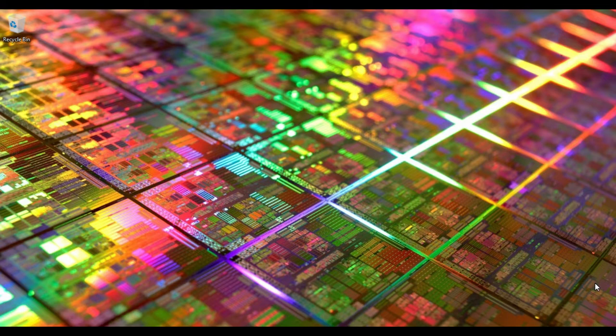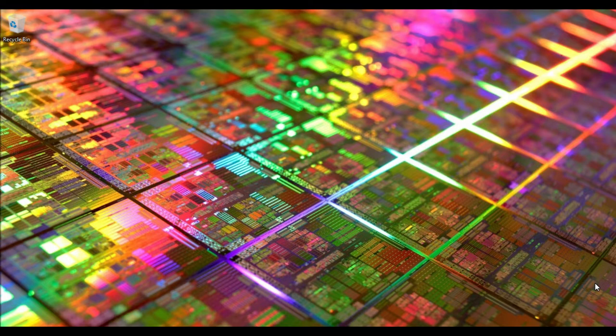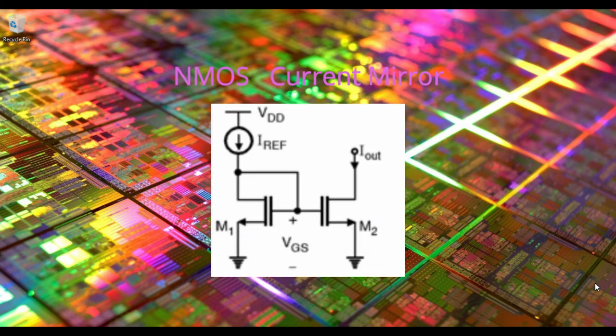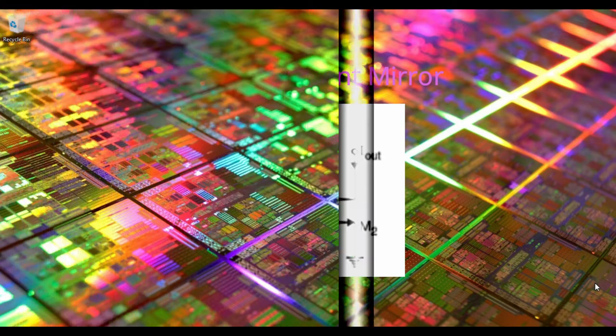However, our main aim was to have an almost ideal current source as the load. Now it's always possible that in an integrated circuit we can have a golden reference current that's copied throughout the chip, which increases its efficiency and also cost. These kind of circuits are also known as current mirrors. So in this video, let's have a look at our CS stage with current mirror load.